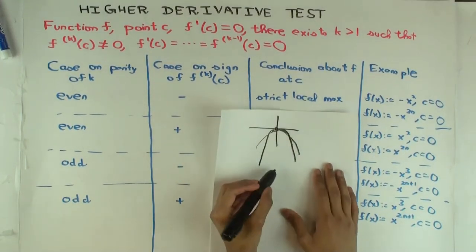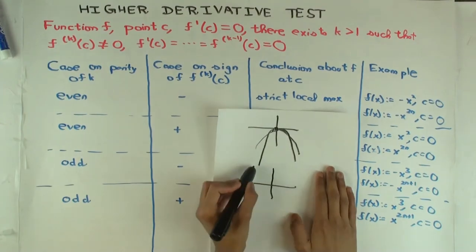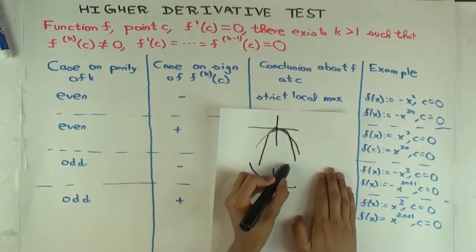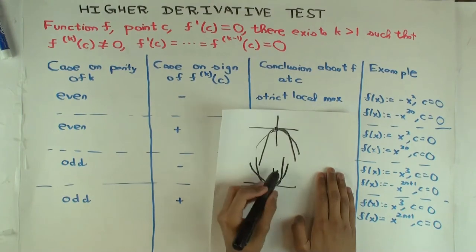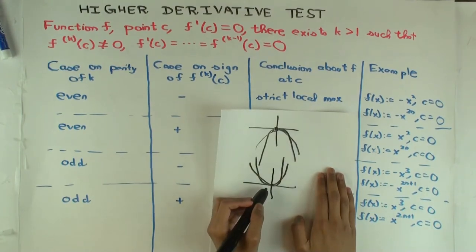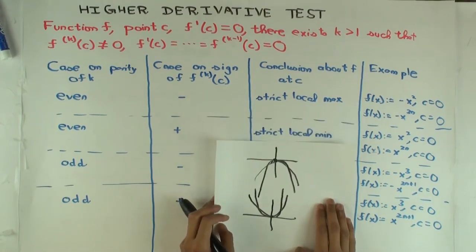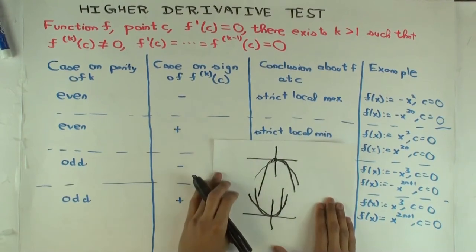And what does the picture look like? Upward facing parabola for x squared. This is a similar thing for x to the 4. It will just be like a little steeper. And so these are concave up shapes. And they have what at the point? Local minimum. Strict local minimum.